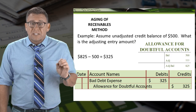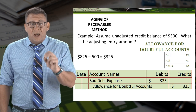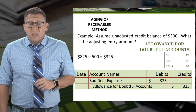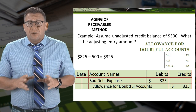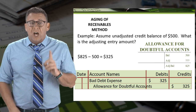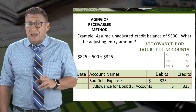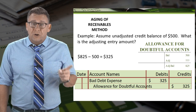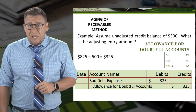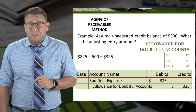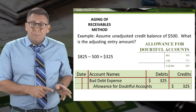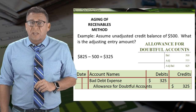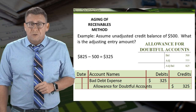$825 is not the amount of the adjusting entry, however. If the allowance for doubtful accounts had an unadjusted credit balance of $500, then the adjusting entry amount required to bring this balance to $825 is a debit to bad debt expense and a credit to the allowance for doubtful accounts for an additional $325.